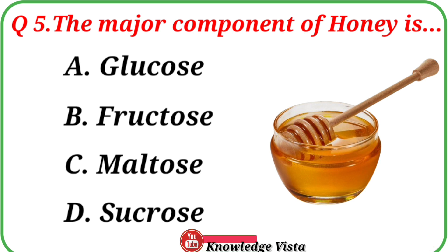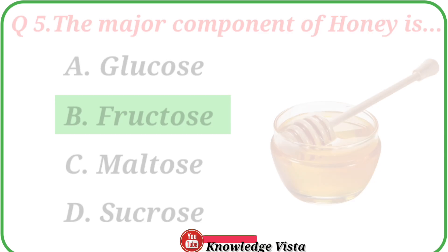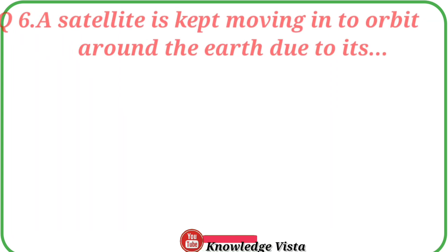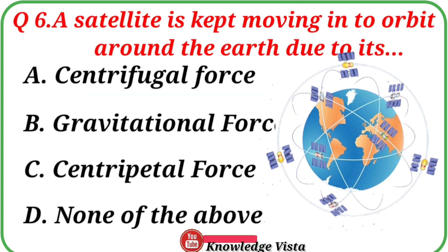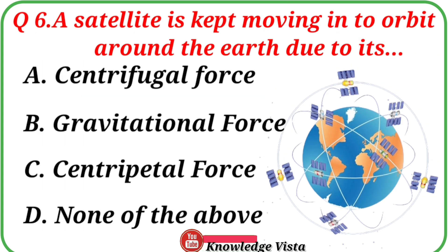Correct answer is option B: Fructose. Question number six: A satellite is kept moving in orbit around the earth due to its...